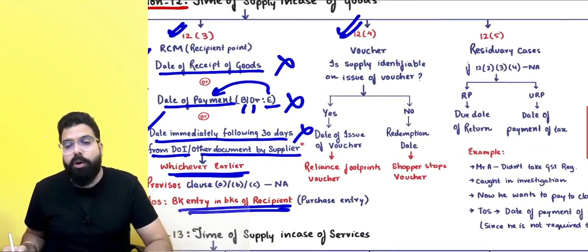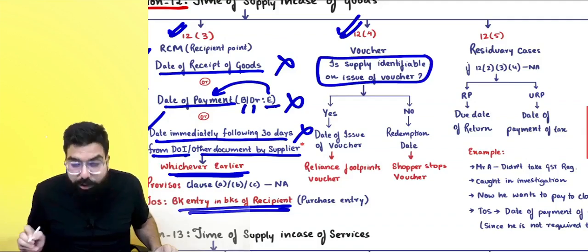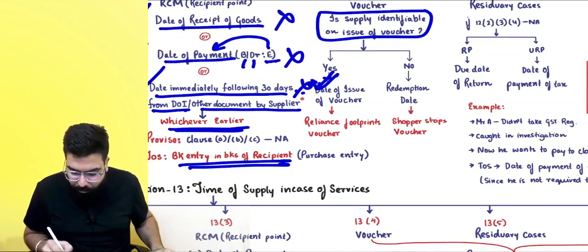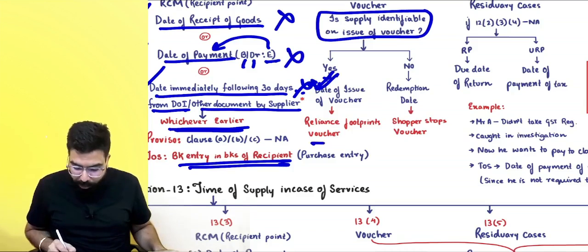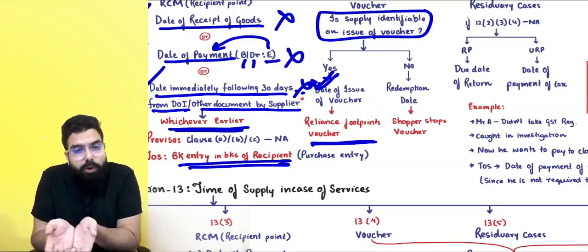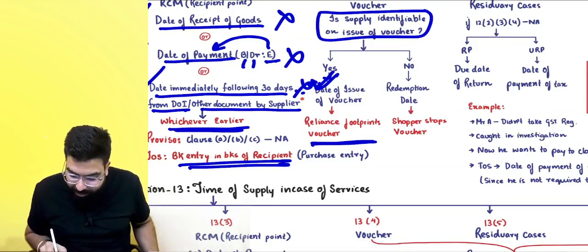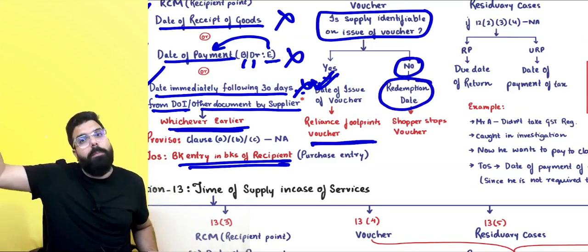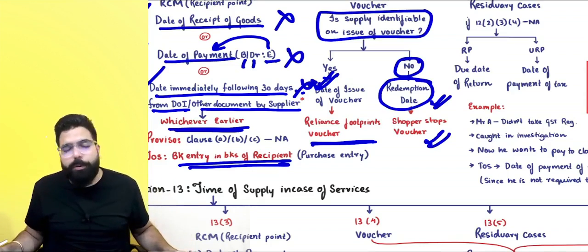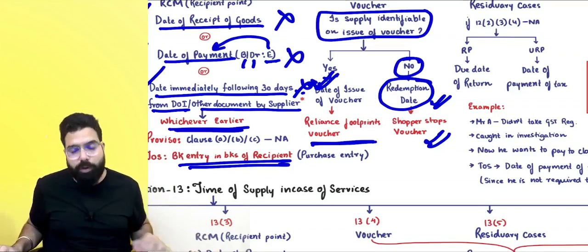Section 12.4 deals with vouchers. Is the supply identifiable at the time of issue of the voucher? If yes, the time of supply is the date of issue. For example, a Reliance Footprint voucher — Reliance knows the supply will be footwear, so the date of issue is the time of supply. If supply is not identifiable, then when the person actually redeems the voucher, that becomes the time of supply. For example, a Shopper Stop voucher — Shopper Stop doesn't know what the person will buy, so redemption date is the time of supply.